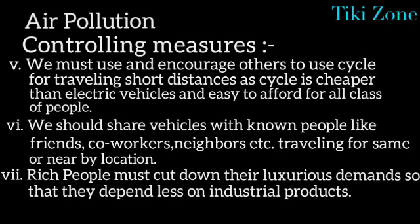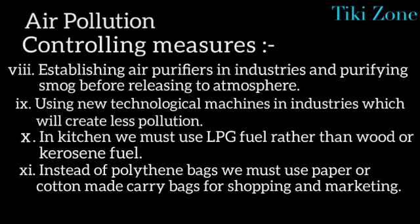We must use and encourage others to use cycles for traveling short distances, as cycles are cheaper than electric vehicles and affordable for all classes of people. We should share vehicles with known people like friends, co-workers, and neighbors traveling to the same or nearby locations. Rich people must reduce their luxurious demands so they depend less on industrial products. Establishing air purifiers in industries and purifying smog before releasing it to the atmosphere also controls air pollution.